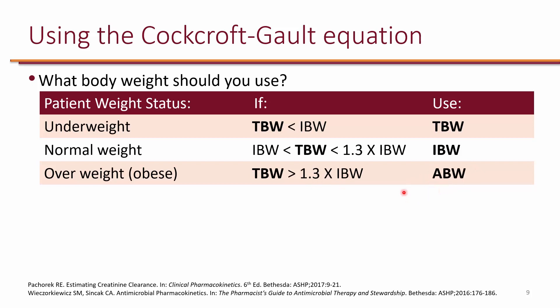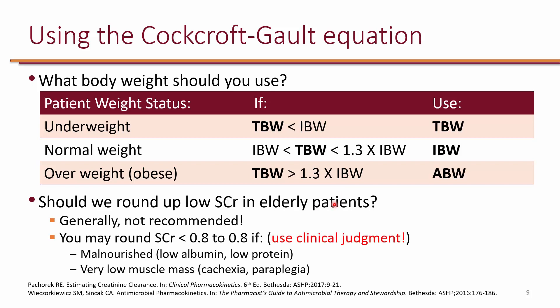These guidelines are for the purpose of this class. There are no universal standards, so always follow what your preceptor tells you, and beyond graduation, always use your own clinical judgment to decide what to do in your practice. For bodybuilders, even if their BMI appears elevated or their total body weight exceeds 20 to 30% over ideal body weight, that is typically muscle, so you may not need to calculate adjusted body weight — but always use clinical judgment.